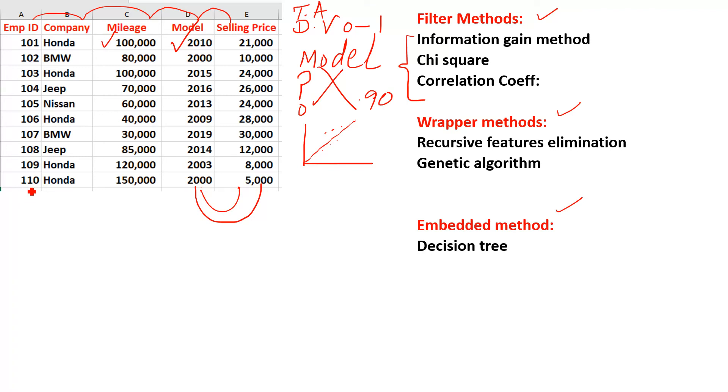Now take the example of employee ID. Here is employee ID 101, 103, and the selling price is 24,000. Suppose I have an employee with ID 5000. What impact is this employee ID making to the selling price? We cannot say the employee ID is 5000, so he can sell the car for 100,000. This is noise. We cannot take this feature.